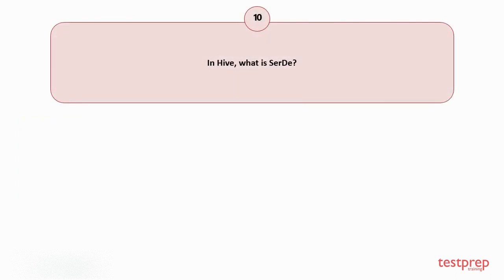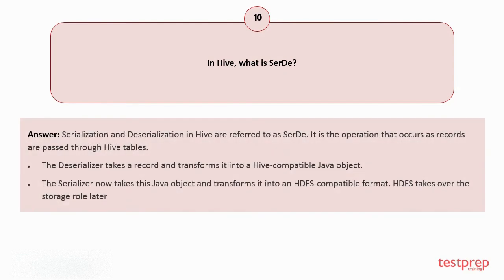Question number 10: In Hive, what is SERDA? Your answer is: 1. Serialization and deserialization in Hive are referred to as SERDA. It is the operation that occurs as records are passed through Hive tables. 2. The deserializer takes a record and transforms it into a Hive-compatible Java object. 3. The serializer now takes this Java object and transforms it into an HDFS-compatible format. HDFS takes over the storage role later.